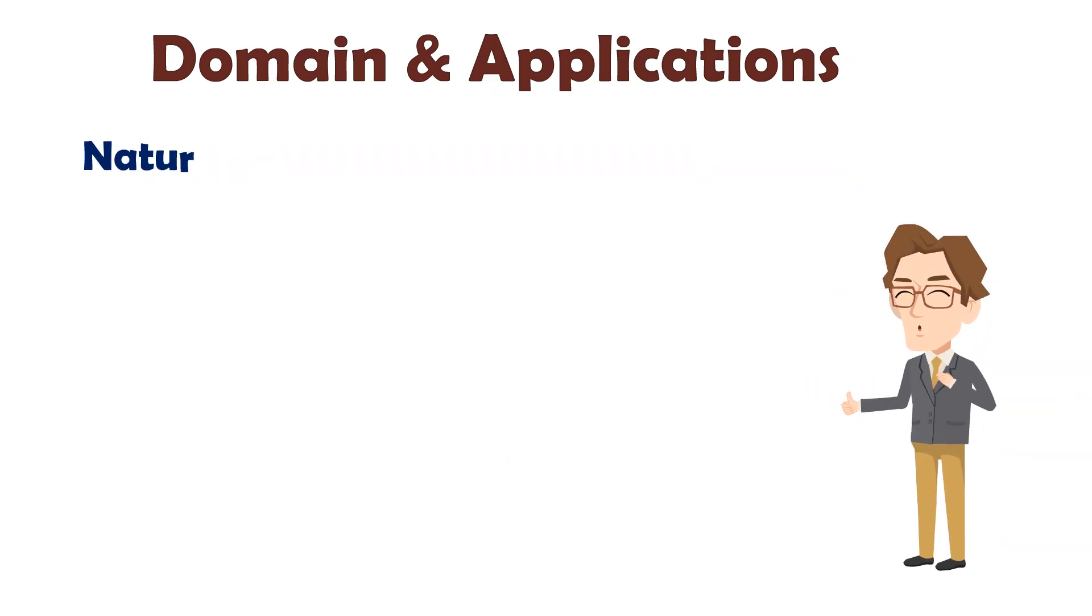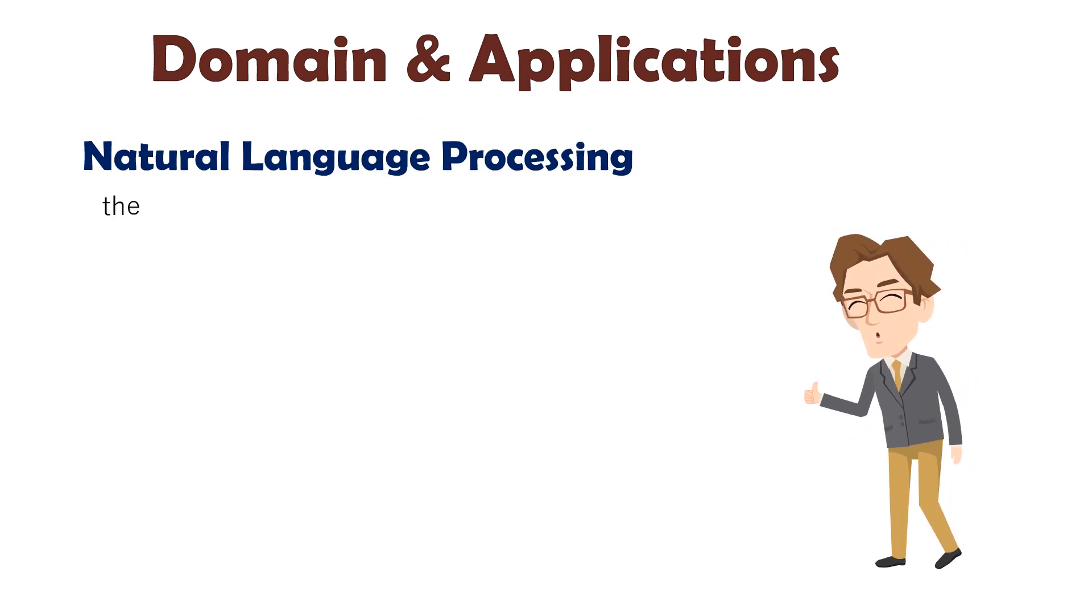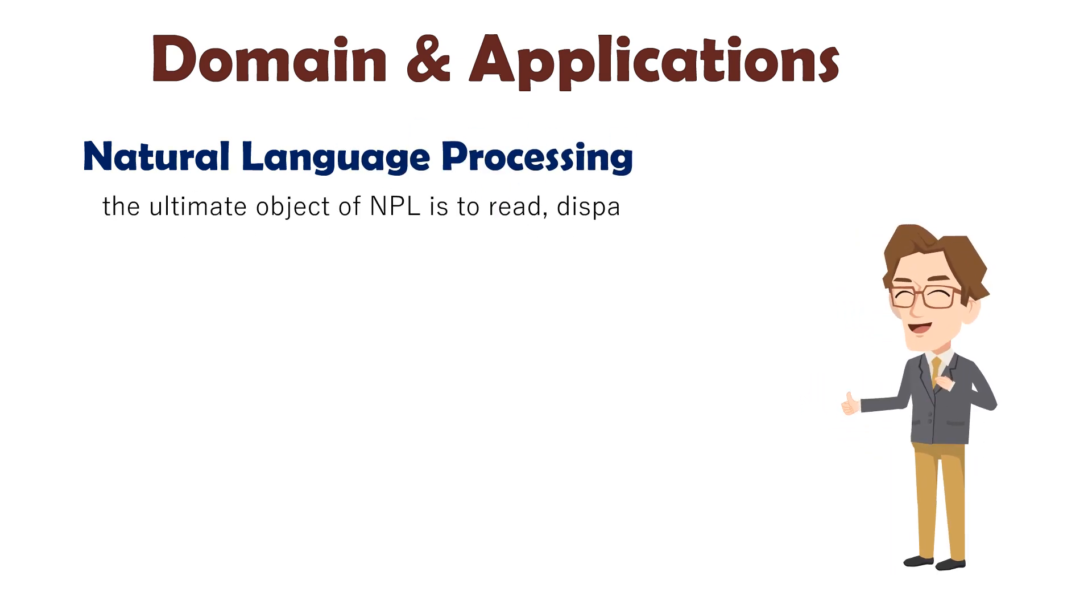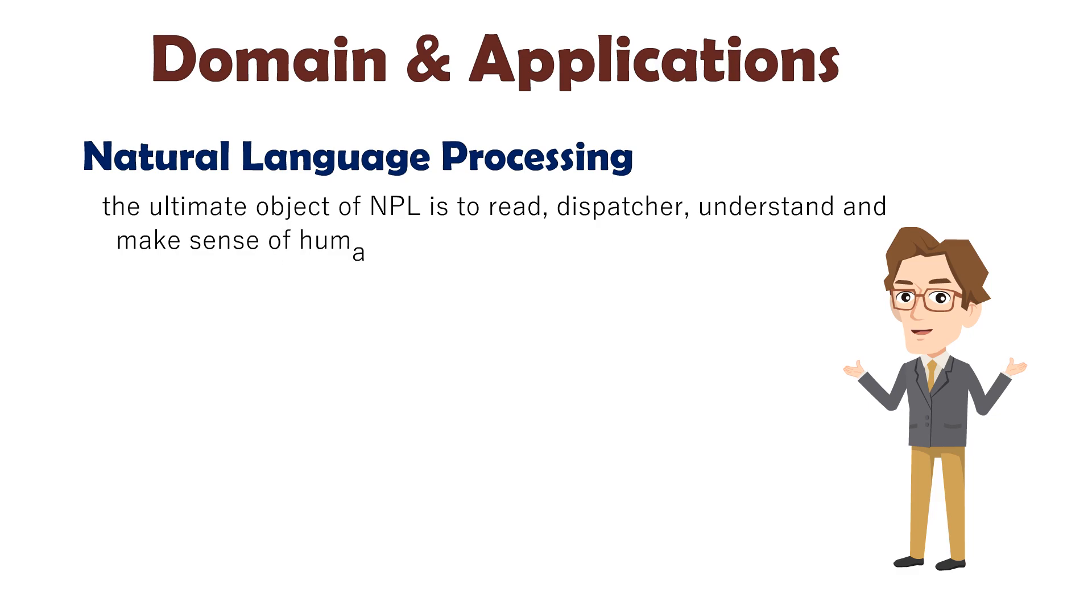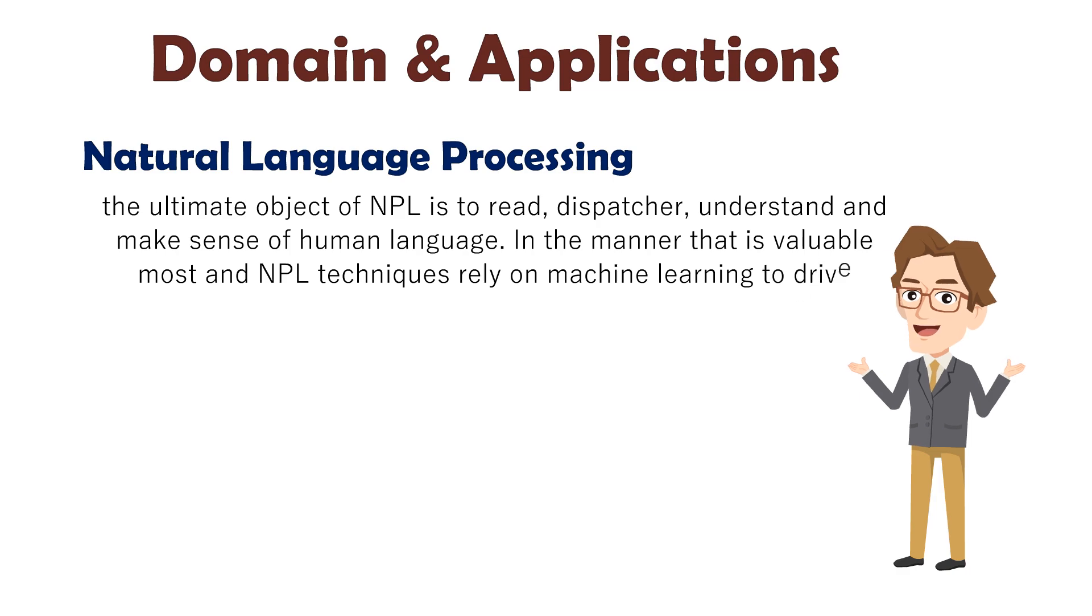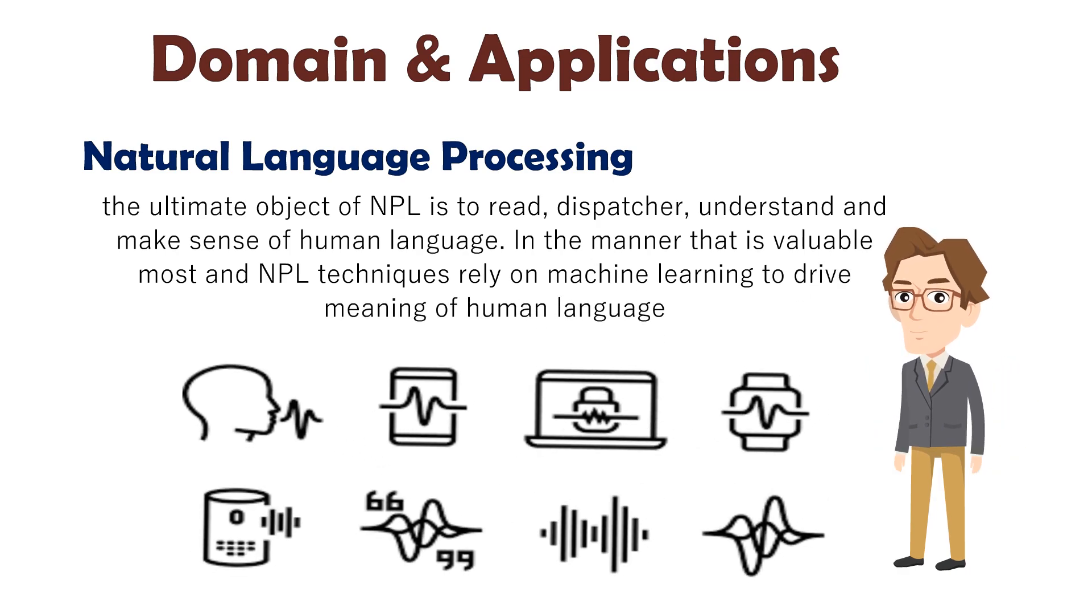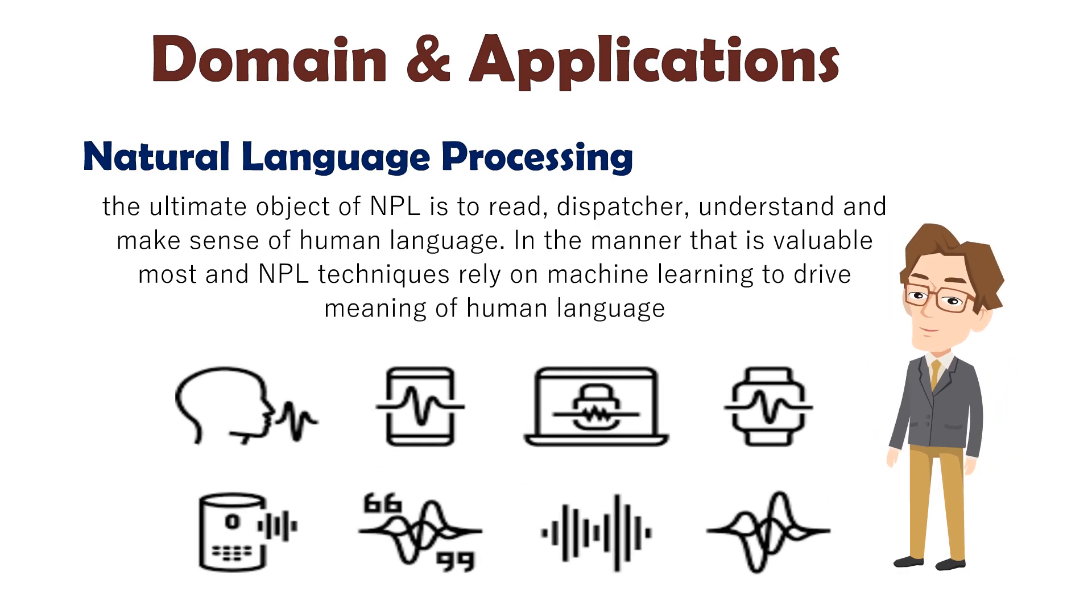And how can we forget NLP - Natural Language Processing? The ultimate objective of NLP is to read, understand, and make sense of human language in a valuable manner. Most NLP techniques rely on machine learning to derive meaning from human language. For example, classifying the sentiment of a text, comment, or article is a challenging subjective task even for real humans.